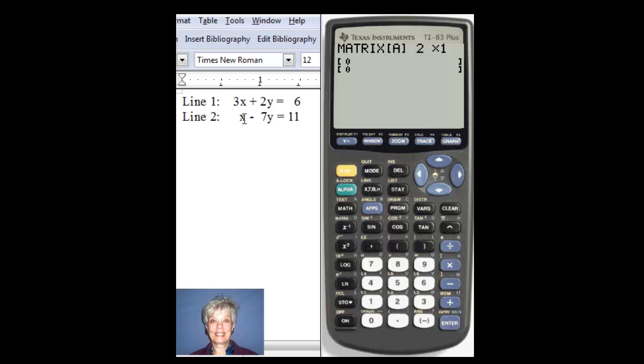Now, the number of columns. There's an x column, y column, constant column. There are three columns. So, I'm going to push three and enter. I have now defined a 2 by 3 matrix. This is going to be a coefficient matrix.